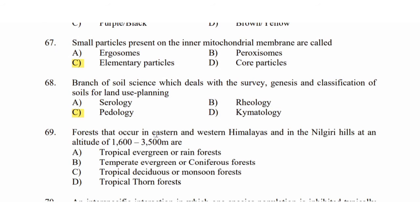Question 69: Forest that occurs in eastern and western Himalayas and in Nilgiri hills at an altitude of 1600 to 3500 meters. Option A: tropical evergreen or rainforest. Option B: temperate evergreen or coniferous forest. Option C: tropical deciduous or monsoon forest. Option D: tropical thorn forest. The answer is Option B: temperate evergreen or coniferous forest.